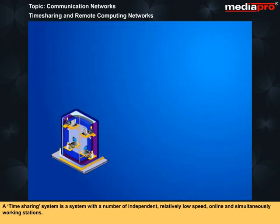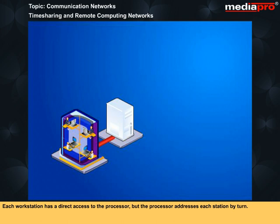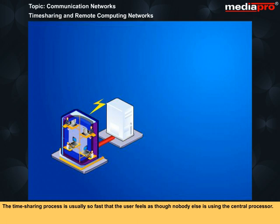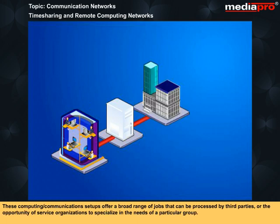A time-sharing system is a system with a number of independent, relatively low-speed, online, and simultaneously working stations. Each workstation has direct access to the processor, but the processor addresses each station by turn. A special program allows the processor to switch from one station to the other and perform each job in an allocated time portion called a time slice, until the job is completed. The time-sharing process is usually so fast that the user feels as though nobody else is using the central processor. These computing communications setups offer a broad range of jobs that can be processed by third parties.